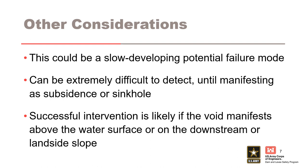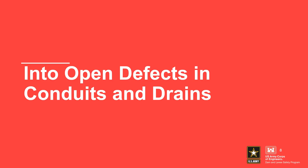There are a few other things to consider for this mechanism. The failure mode can develop very slowly over a long period of time and can be very difficult to detect until the void progresses to the surface and is observable. Successful intervention is likely if the void forms above the water or is on the downstream slope. The first scenario — internal migration into open defects in conduits and drains — will be discussed in the following slides.